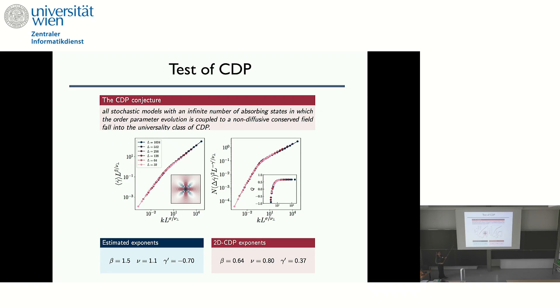And if you do so, you find a very nice collapse. So you do this for the, you have a universal function for the rate response, universal function for the fluctuations, and a universal function for what is called the Binder cumulant. And when you do so, you find these exponents here. So this is the inverse Herschel-Bulkley exponent, correlation length, and fluctuations. And what is quite interesting is that in the framework of absorbing phase transition, there's a conjecture that all stochastic models with an infinite number of absorbing states in which the order parameter evolution is coupled to a non-diffusive conserved field, which is our case, all fall into the universal class of CDP.